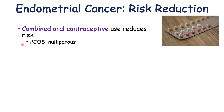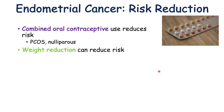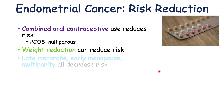Weight reduction is also important. We talked about adipose tissue increasing the conversion of steroid precursors into estrogen. Because of decreased weight, that's going to decrease levels of estrogen, leading to decreased risk of endometrial thickening and endometrial cancer.